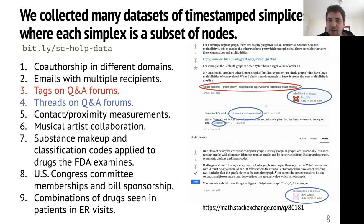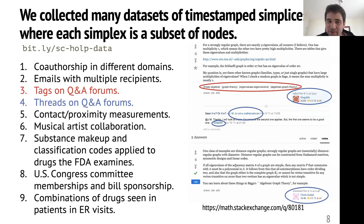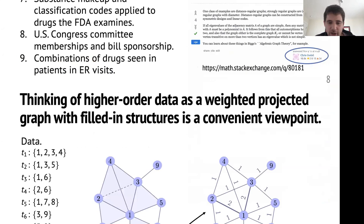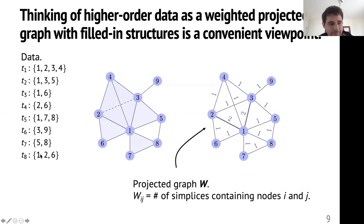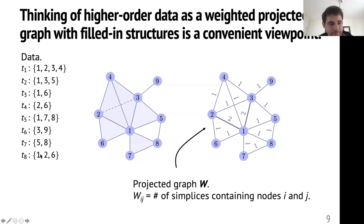I'm going to call each of these higher-order interactions a simplex — just some subset of nodes. Here's what the data looks like as a cartoon: we have a bunch of simplices, each describing a small set of nodes or group interaction. There are two pictures to have in mind. On the left is one where all higher-order interactions are filled in — nodes one, seven, and eight appeared together in a group at time t5, so we fill that in. The other is the projected graph, which takes all induced pairwise connections given by the higher-order ones and weights edges by the number of higher-order interactions — so there's a weight of two between nodes one and two because they appear in a simplex at time t1 and also at time t8.